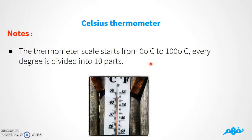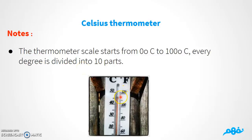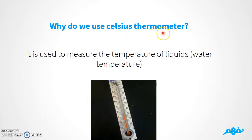An important point: the thermometer scale of the Celsius thermometer starts from 0 up to 100, unlike the medical thermometer which goes from 35 to 42. Every degree is also divided into 10 parts. We use the Celsius thermometer to measure the temperature of liquids, like water or milk.